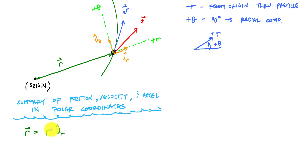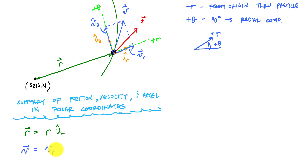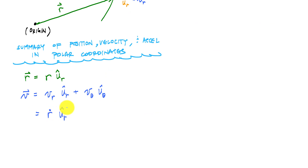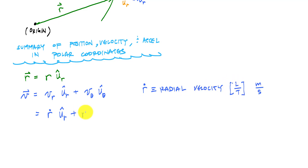My velocity vector can be broken up into two components: a radial component and a transverse component. The velocity vector is v-r in the u-r-hat direction plus v-theta in the u-theta-hat direction. Here, v-r is also called r-dot, the radial velocity, with units of meters per second. The transverse term is r times theta-dot in the u-theta-hat direction.